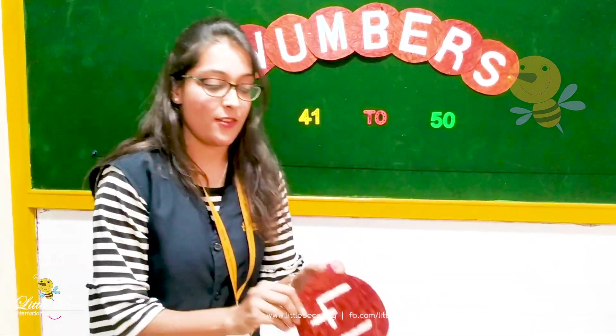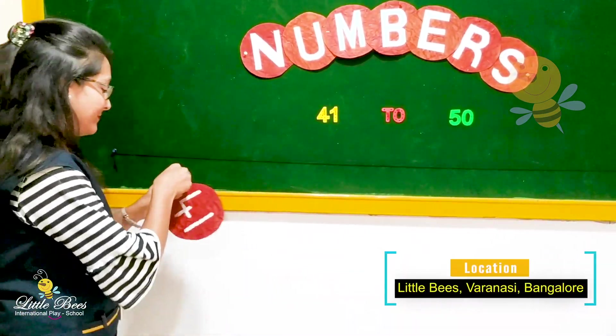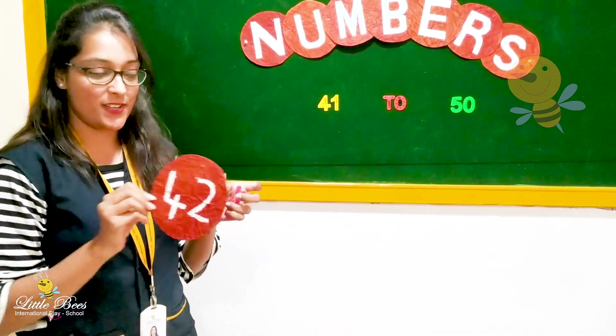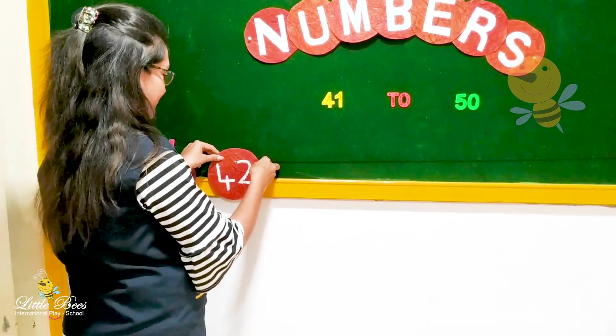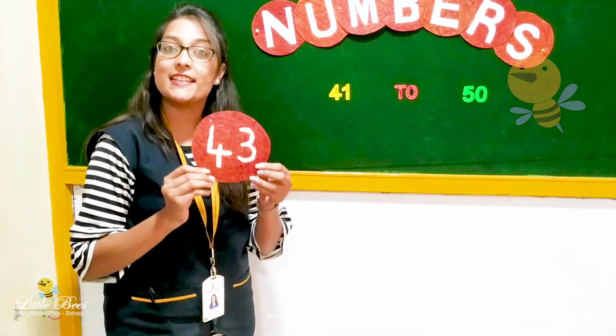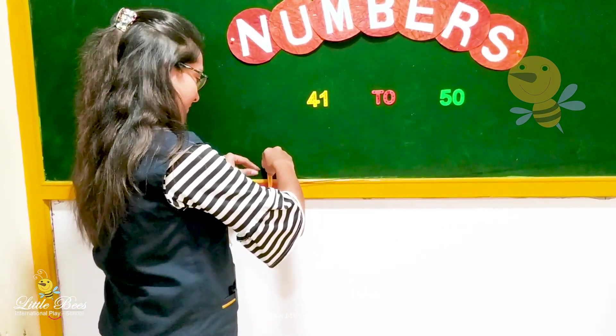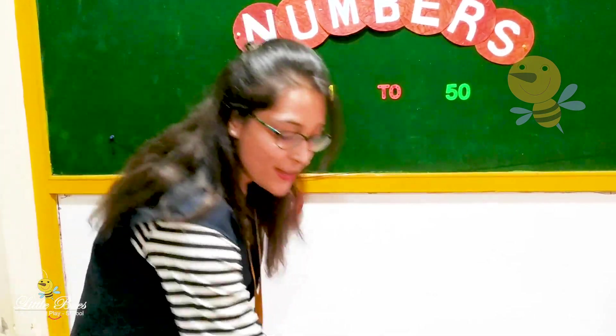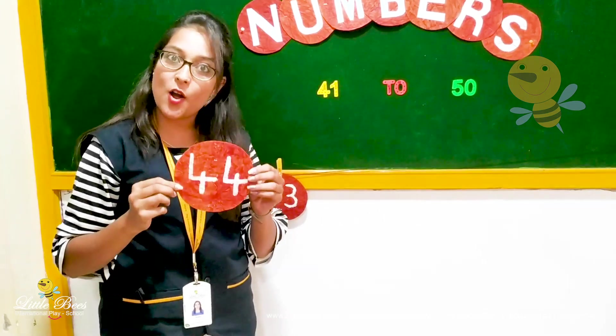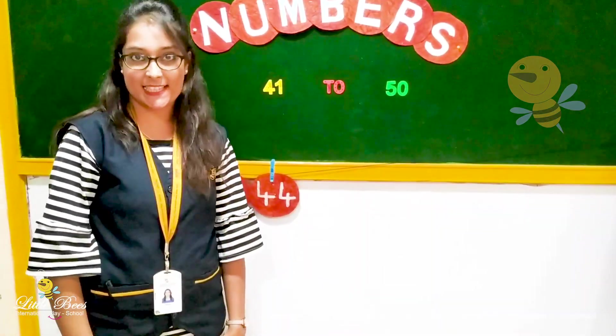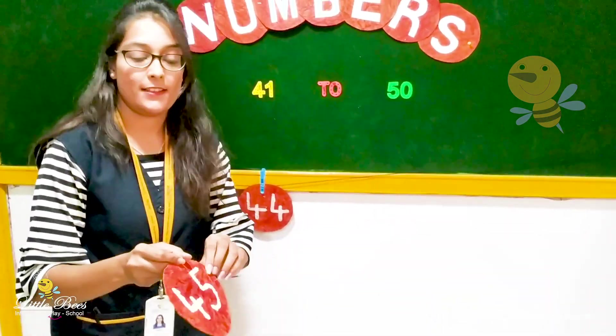So we have 41. Our next number is 42. Next number I have here is 43. Next number is 44. Next number 45.